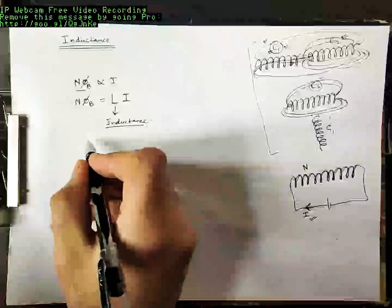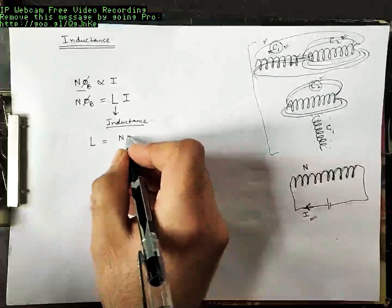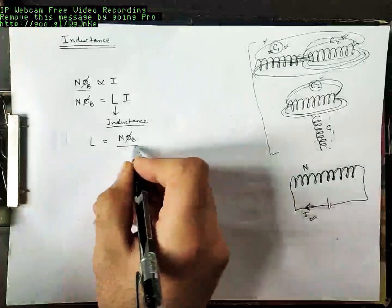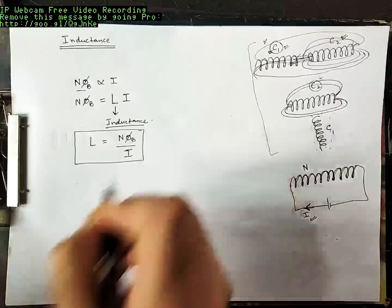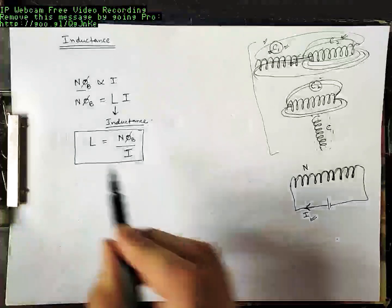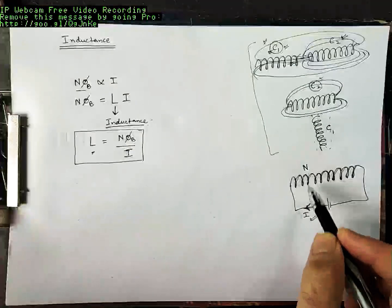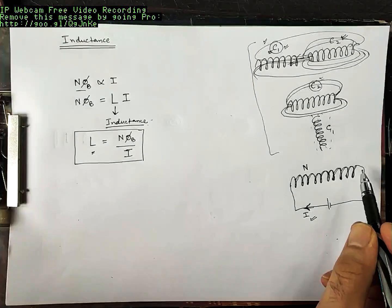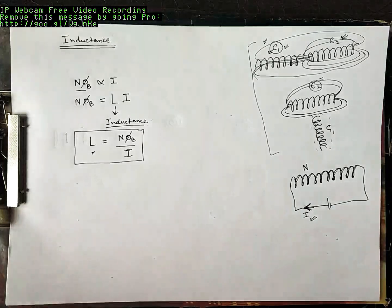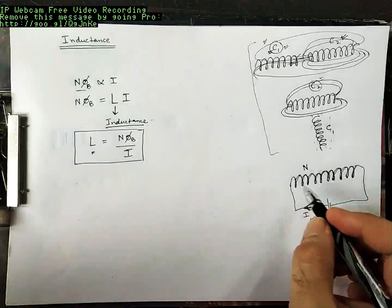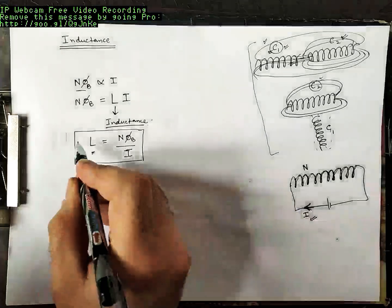So we can write: inductance L is defined as total flux per unit current. The inductance of a particular coil is the total flux linking that coil per unit of current flowing through that coil. Thus, if more flux is passing through the coil for the same current I, then that coil has more inductance.